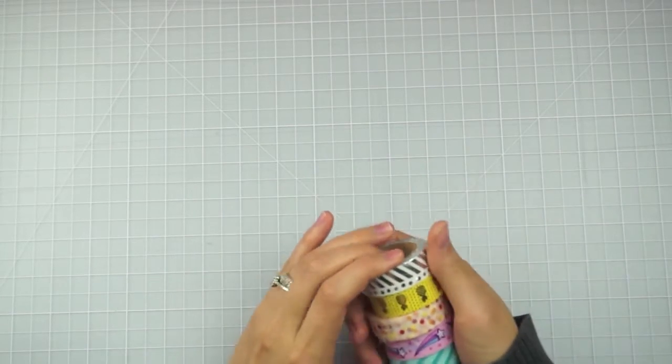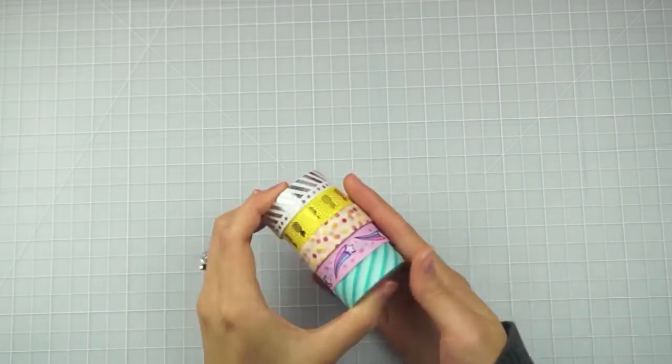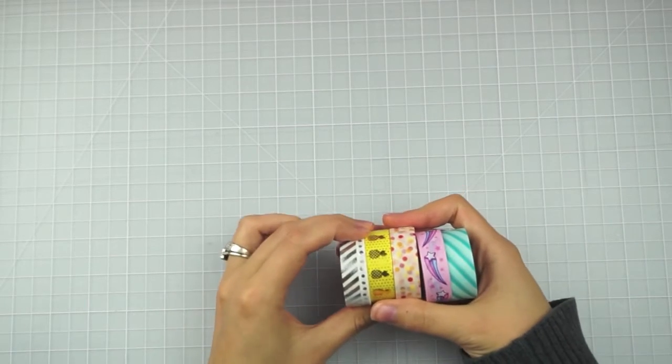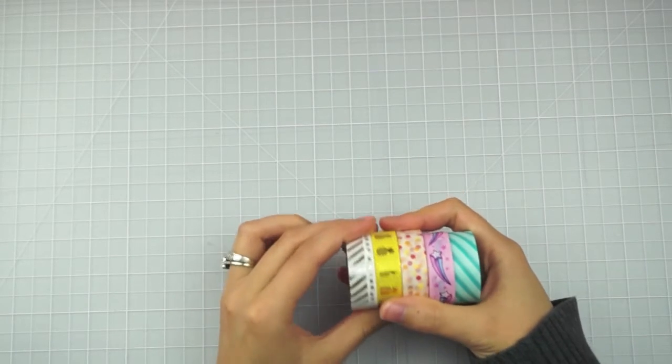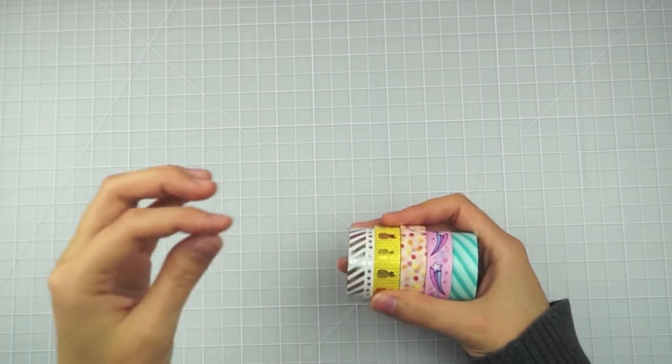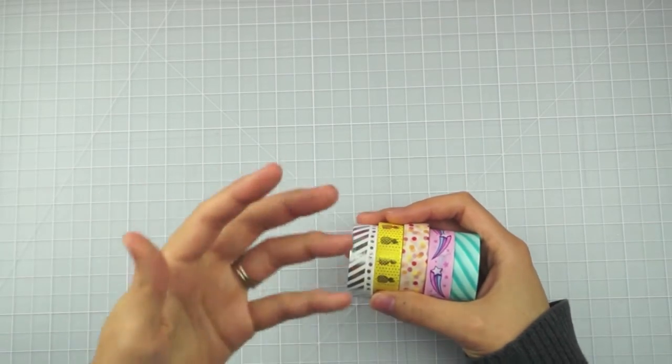But for this video, I want to talk all about washi tape. And we're starting with the very basics today. It's how to cut your washi tape. Washi tape is great because it's super easy to work with. You can just rip it, of course.